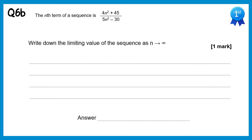Now we need to find the limit of the sequence. If we lose the 45 and negative 30, we get 4n squared over 5n squared. Cancel the n squareds and you get 4 over 5, or 0.8.